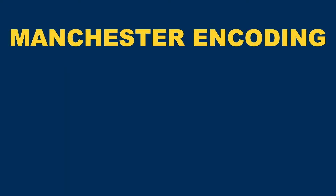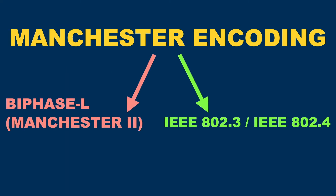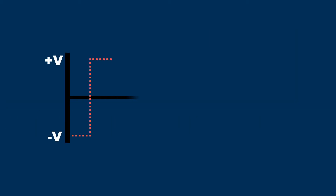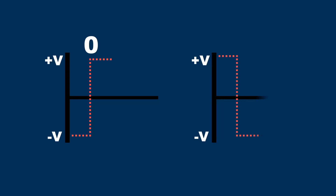In Manchester encoding, there are two different conventions for representing binary data, which can cause confusion. In the first convention, a zero-bit is represented by a low-to-high transition in the middle of the bit time, and a binary one as a high-to-low transition. In the second convention, it works the other way around.